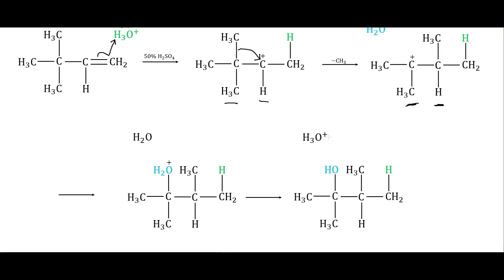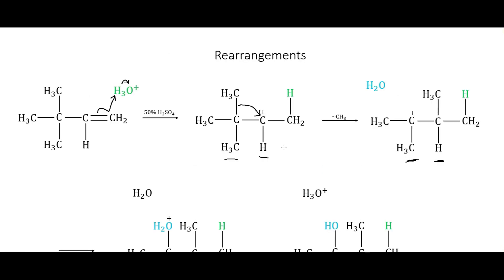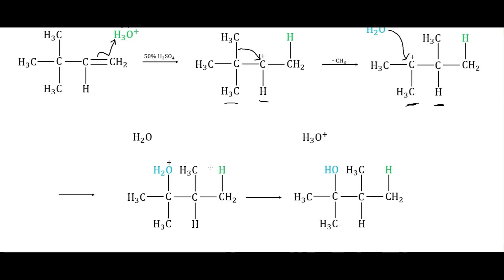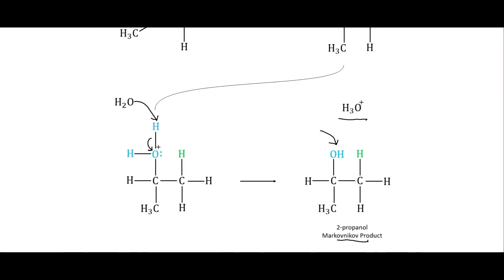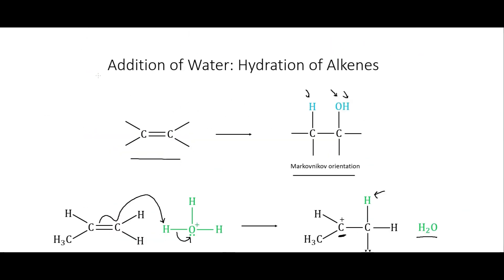Our water then comes down and bonds to that tertiary carbocation. The rest of the reaction is just what we saw before — water takes the hydrogen, the electrons go to the oxygen, and we end up with our hydronium and our alcohol. But now the alcohol is on a carbon that is one away from the carbon the hydrogen went onto, because we had that rearrangement. So with these hydration reactions we can have these rearrangements occurring.